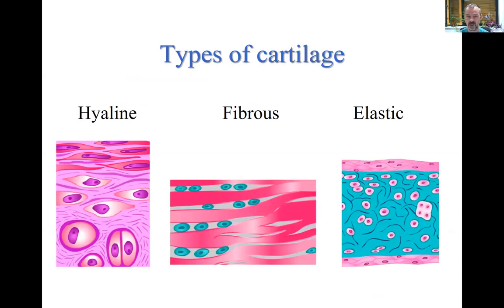As for cartilage, generally we have three types, and in joints we can meet two of them. Mainly hyaline cartilage, which forms the articular surfaces, but some articular surfaces are subjected to greater load, which is why we can find fibrous cartilage. Elastic cartilage is found outside the joints — for example in the epiglottis of the larynx or in the external ear cartilage.